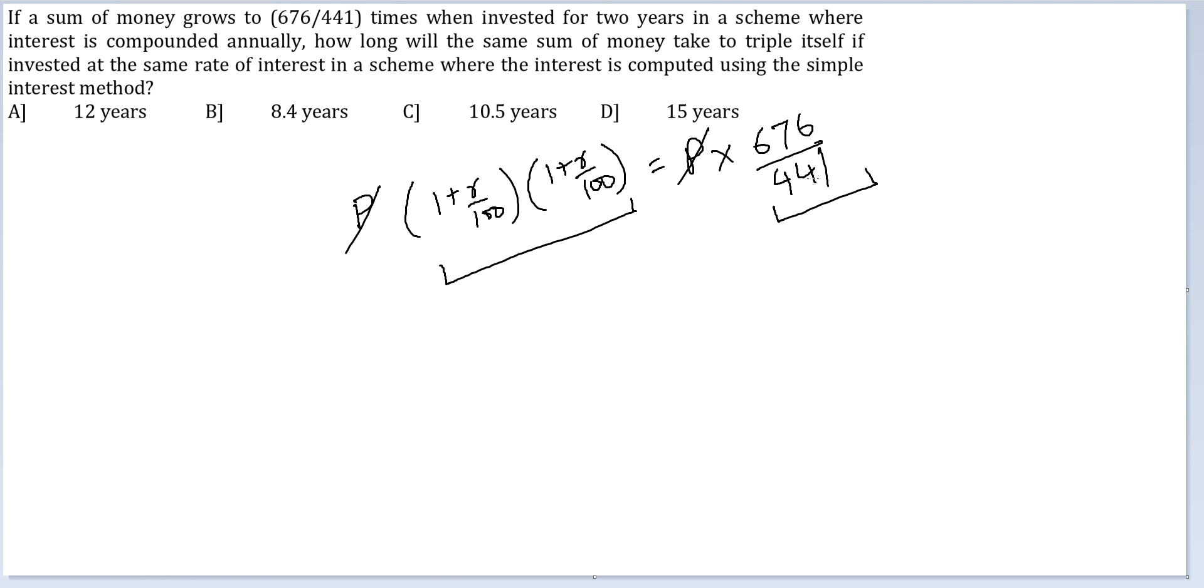The numbers here on the numerator and denominator are also perfect squares. You get 1 plus R by 100 is equal to—this is square of 26, this is square of 21. So you get R by 100 is equal to 5 by 21, or R is equal to 500 by 21. This is the final value of the rate of interest.